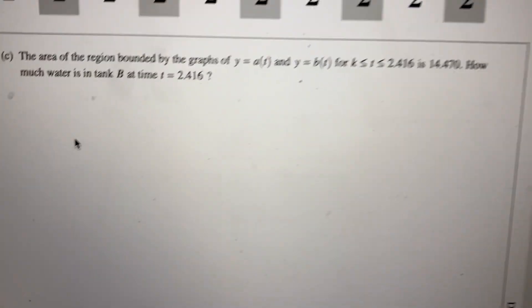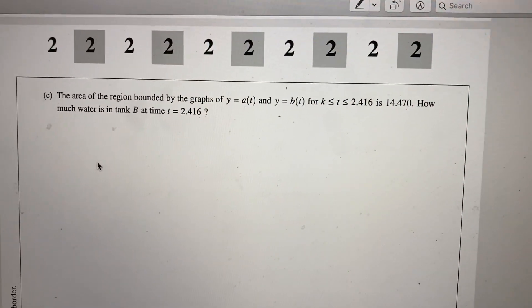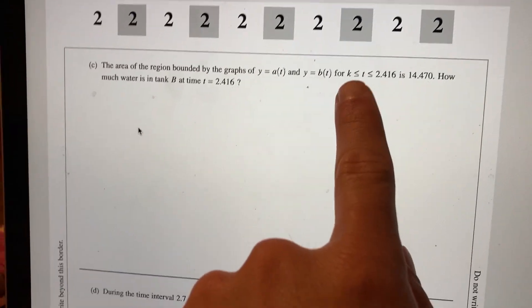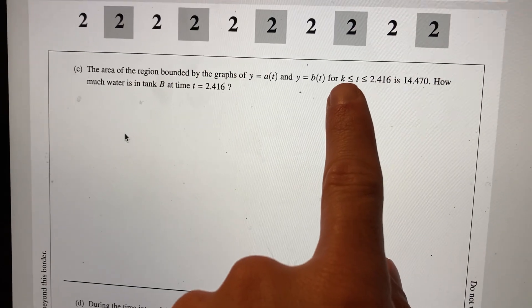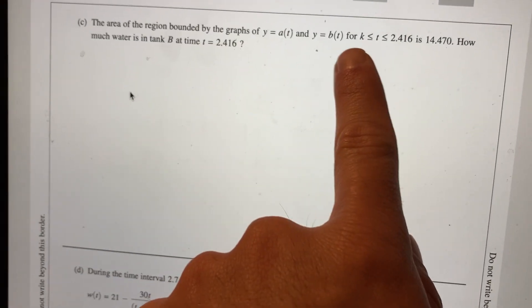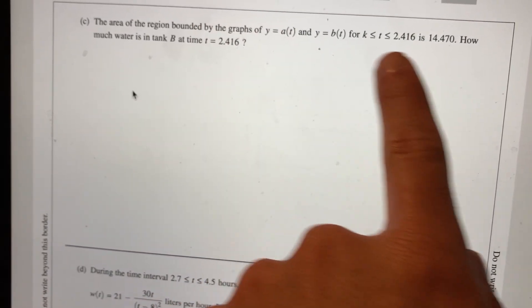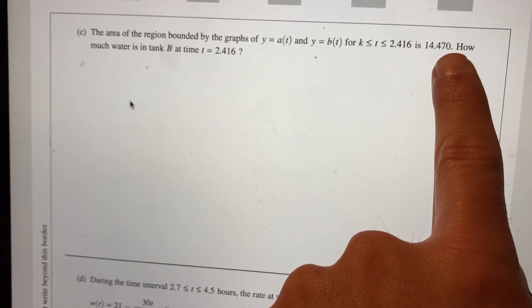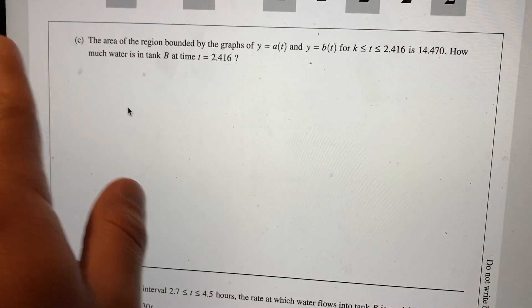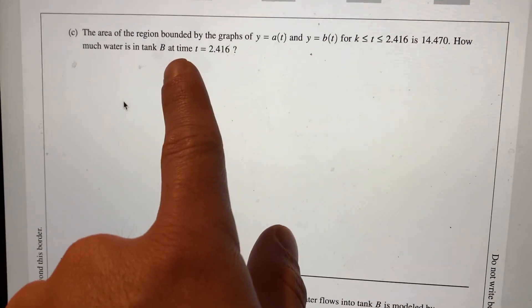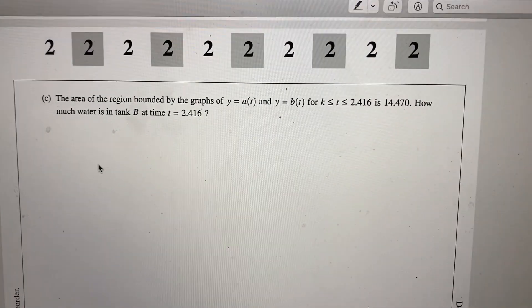Now we go to C. The area of the region bounded by the graphs, we already know this K, it's 0.89 whatever, whatever that we just found. So the average of the bottom of the graphs for in between those two is 14.470. How much water is in tank B at this time? Okay, let's just talk about it. What do we know? What do we have? What do we not know?